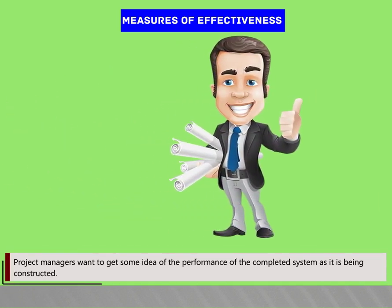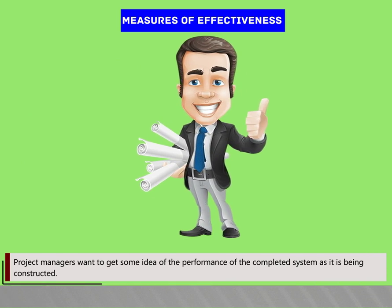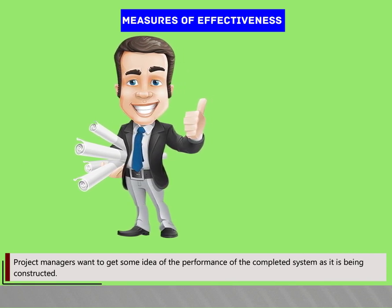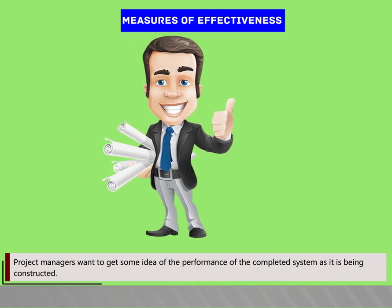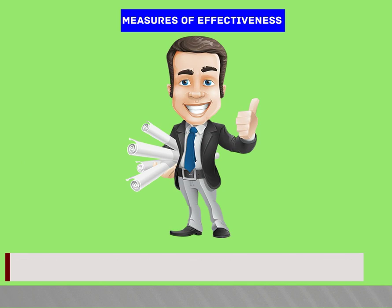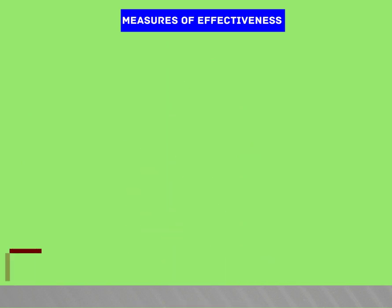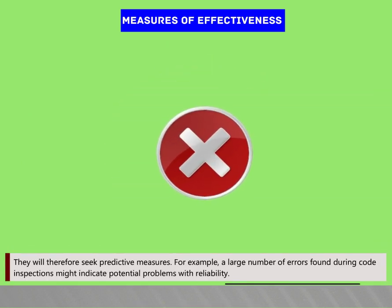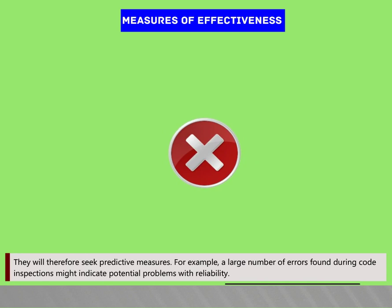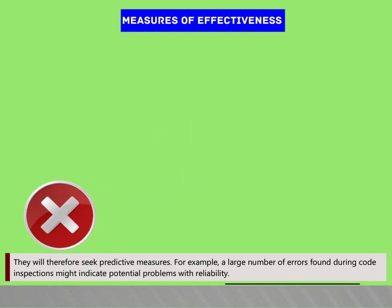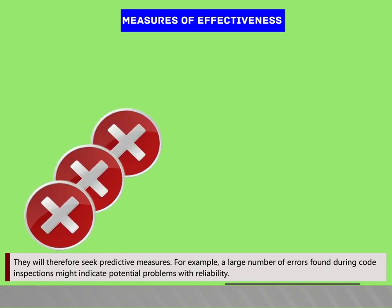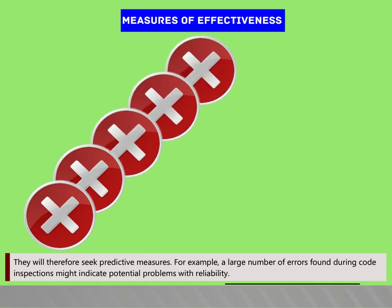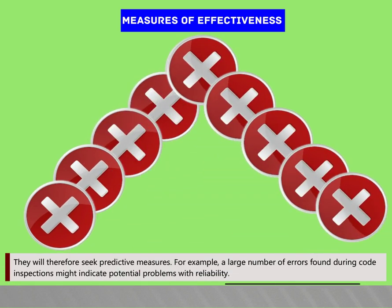Measures of effectiveness provide practical methods of checking that an objective has been met. Mean time between failures (MTBF) might, for example, be used to measure reliability. This is a performance measurement and can only be taken once the system is operational. Project managers want to get some idea of the performance of the completed system as it is being constructed, and will therefore seek predictive measures — for example, a large number of errors found during code inspections might indicate potential problems with reliability.